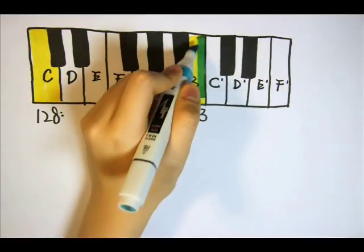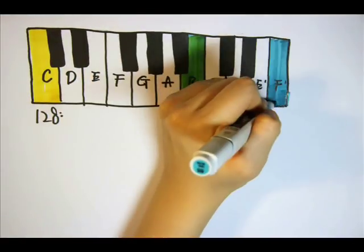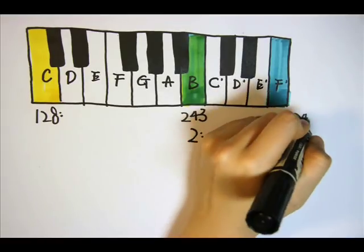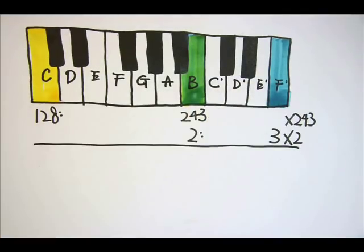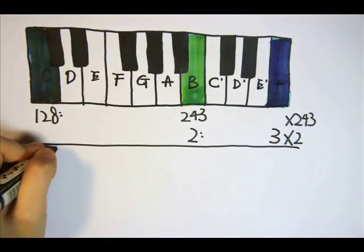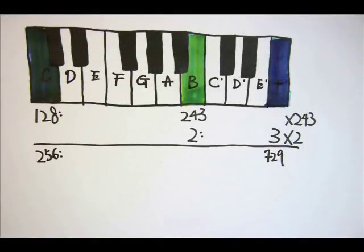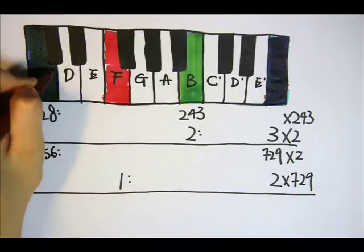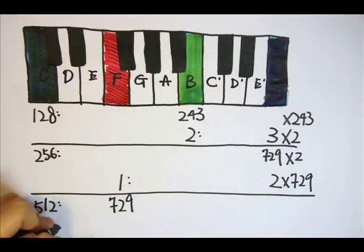Lastly, as the perfect fifth interval B to F' has a frequency ratio of 2 to 3, if we combine this into the ratio of C to B, 128 to 243, we realize that the ratio of C to F' equals 256 to 729. Just as in the previous calculations, since the ratio of C to F' is 1 to 2, we can derive that the ratio of C to F equals 512 to 729.